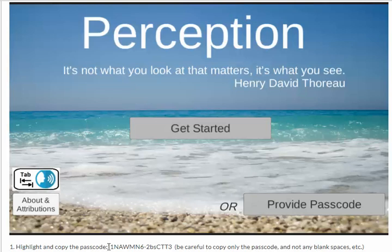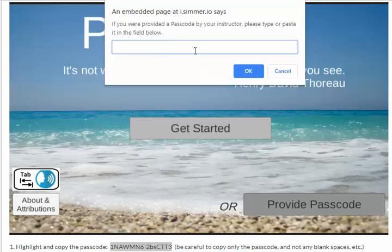We're going to be using the Perception app to work on the labeling of correlations. To get started, go ahead and highlight and then copy the passcode, making sure not to include any blanks on either side.